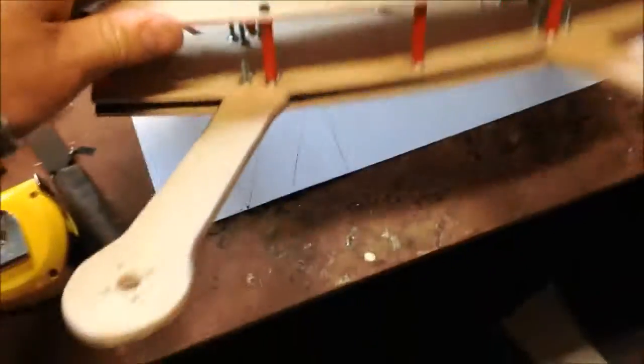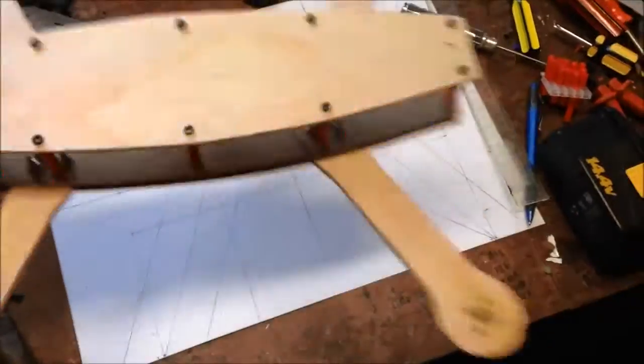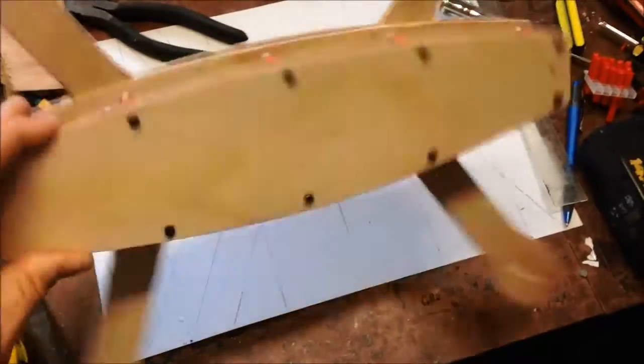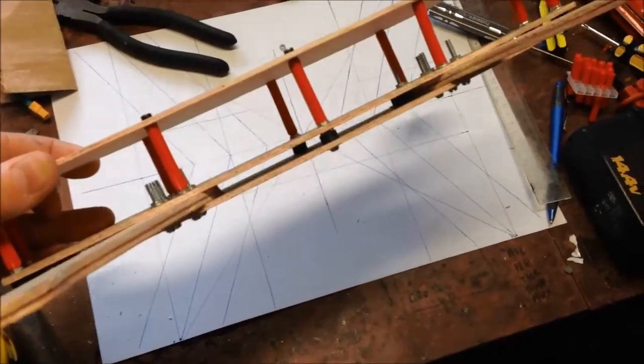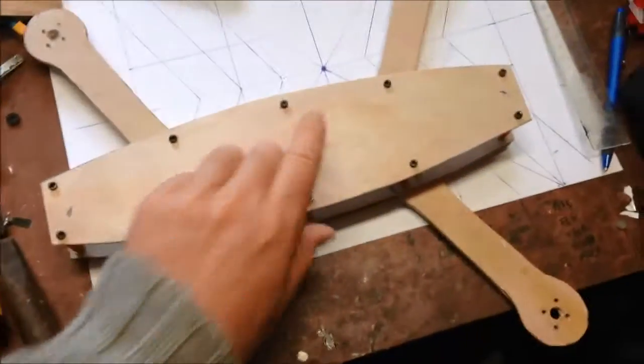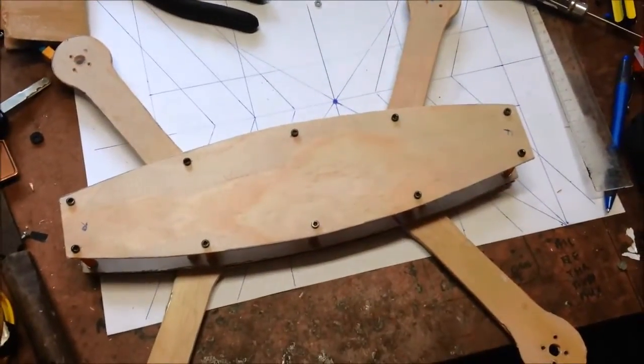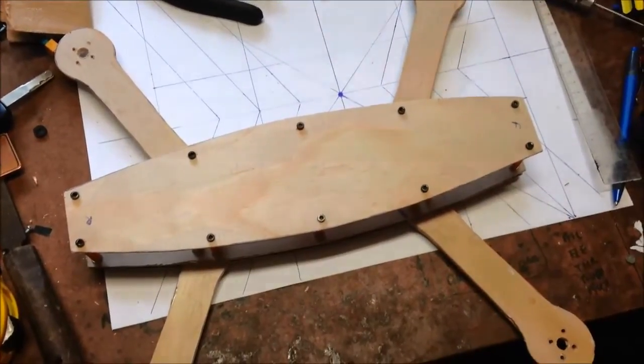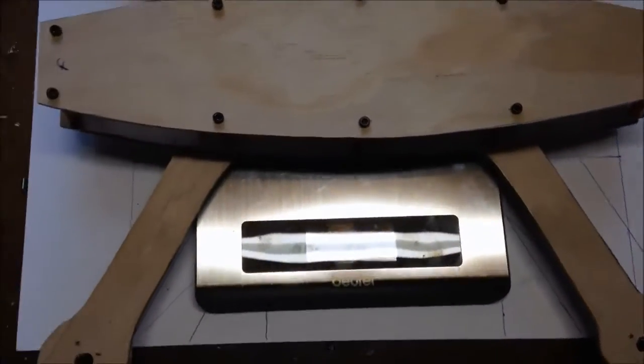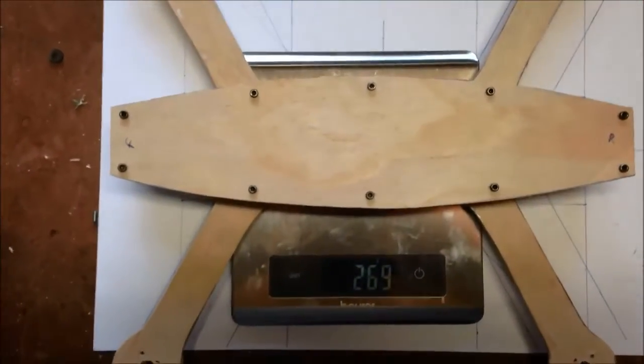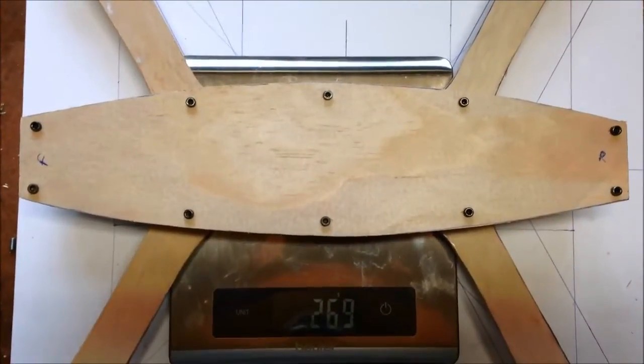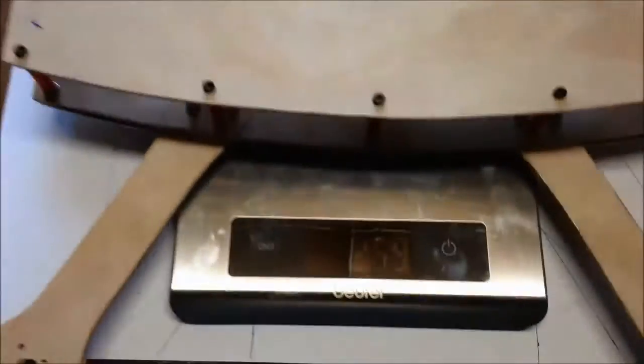And there we have it, the ZMR 430. Worked quite well, those standoffs. Quite light, I'll weigh it and we'll move on to electronics and motors. So all up weight, 269 grams for a 430 frame. Seems pretty good.